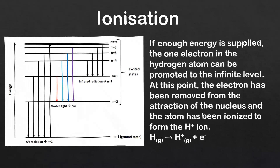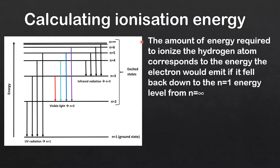The amount of energy required to ionize the hydrogen atom corresponds to the energy the electron would emit if it fell back down to the n equals 1 energy level from n equals infinity. This arrow represents the electron transition from n equals infinity down to n equals 1, corresponding to the energy required to ionize the hydrogen atom.